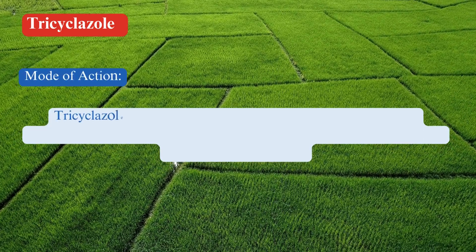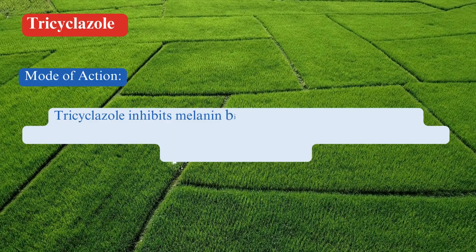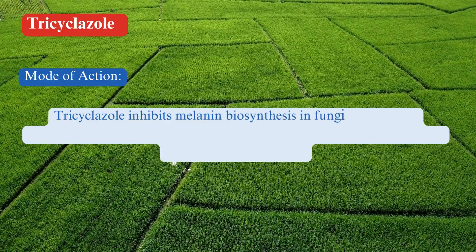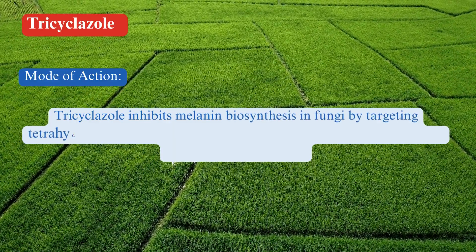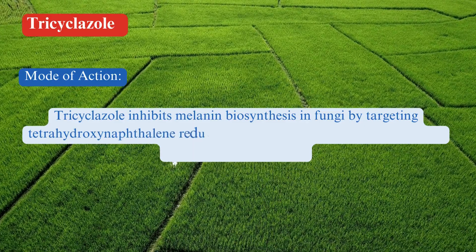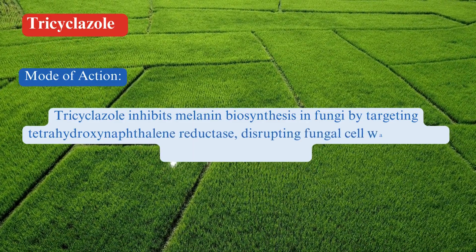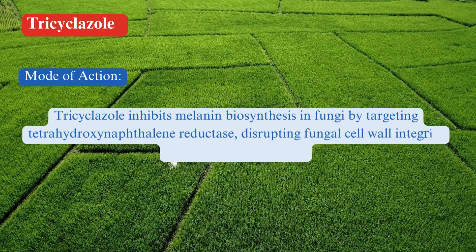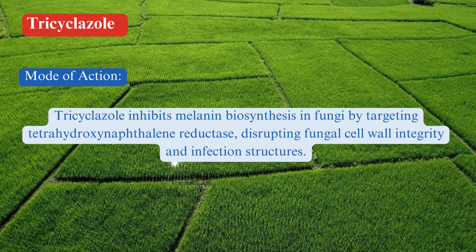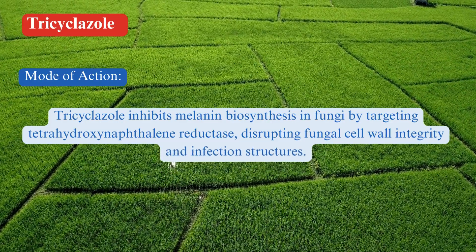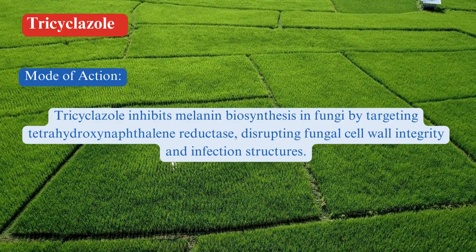Mode of Action: Tricyclozol works by inhibiting melanin biosynthesis in fungal cell walls. Specifically, it inhibits the enzyme tetrahydroxynaphthalene reductase, which is involved in the biosynthesis of melanin. Melanin is crucial for the structural integrity and pathogenicity of the fungal cell wall.